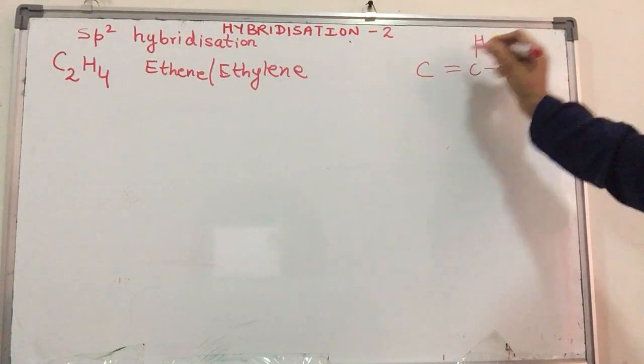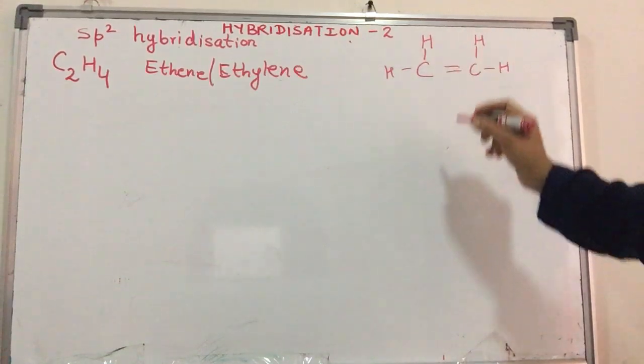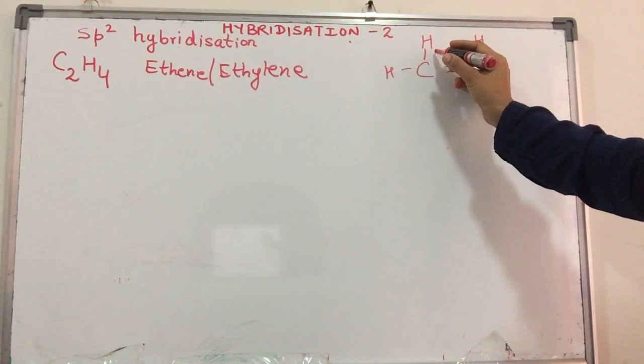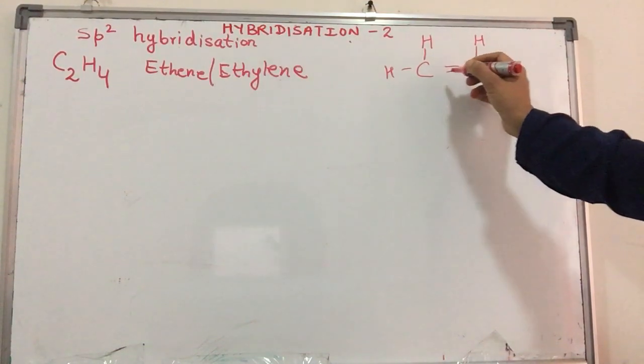So hydrogen, hydrogen, hydrogen. There are four hydrogen atoms. Each carbon atom is attached to two hydrogen atoms. But in turn, between the two carbon atoms, there is a double bond.